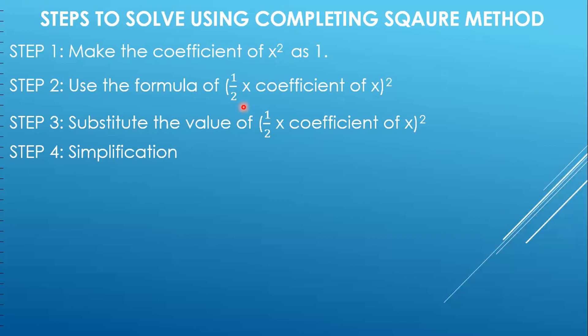In the third step we will be substituting the value of half into coefficient of x, the whole square — whatever value we get after solving this formula. And the fourth step will be normal simplification. So let us move ahead and solve the question.